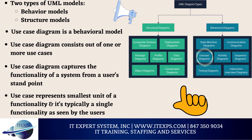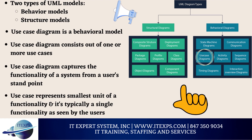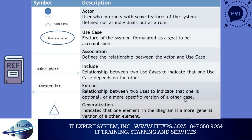The purpose of use case is to capture the functionality of the system from the user's standpoint. A use case diagram consists of multiple use cases, and each use case represents the smallest unit of functionality — typically a single functionality as seen by the users. The first symbol we'll look at is the actor symbol. Drawn as a stickman, it's a user who interacts with some features of a system, for example, a customer or a manager. Whenever an actor is defined, it should never be defined as an individual — it should be defined as a role.